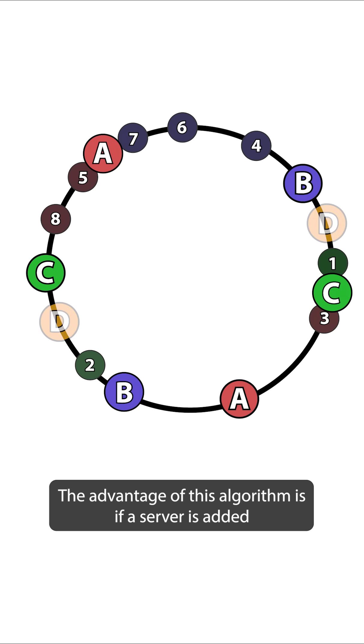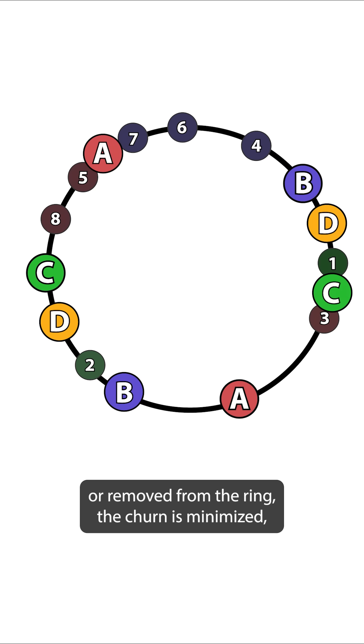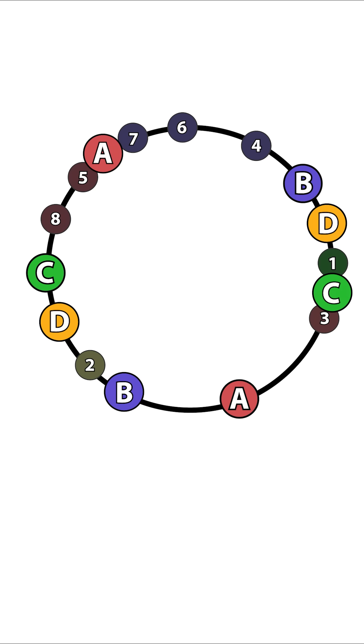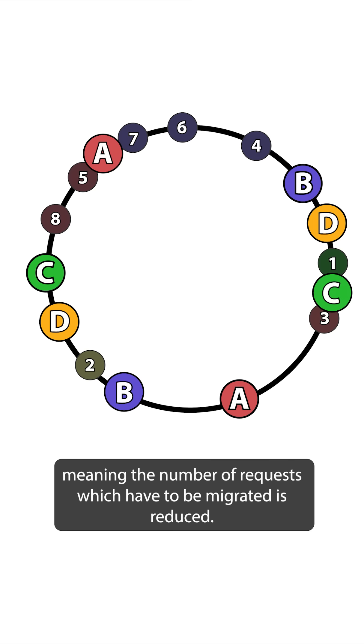The advantage of this algorithm is if a server is added or removed from the ring, the churn is minimized, meaning the number of requests which have to be migrated is reduced.